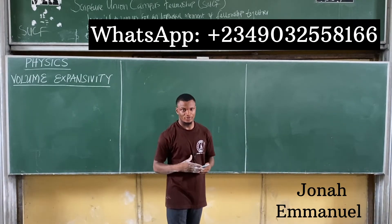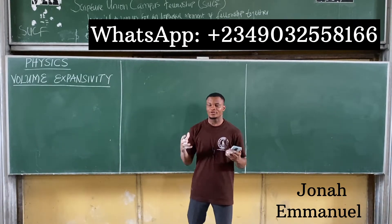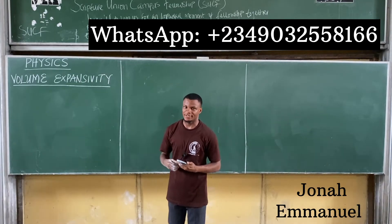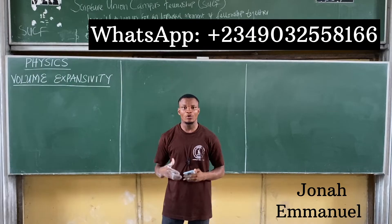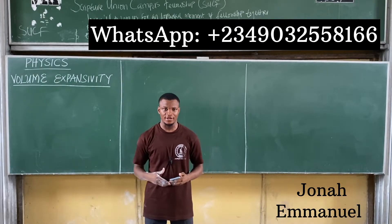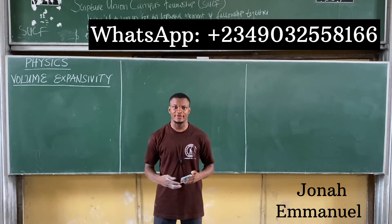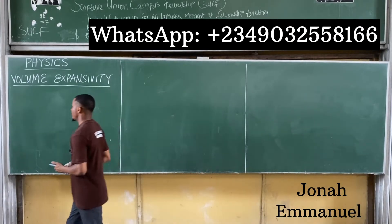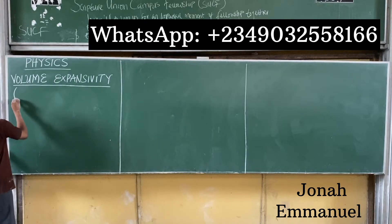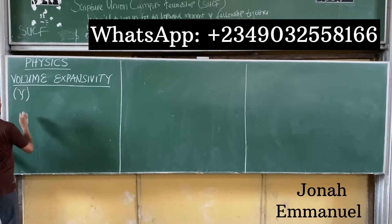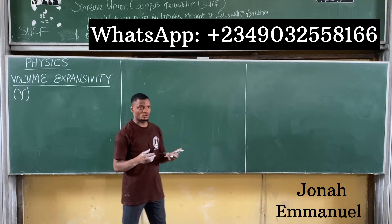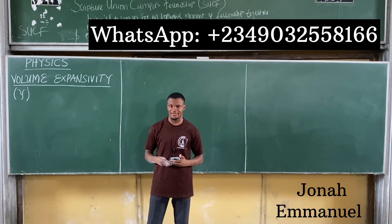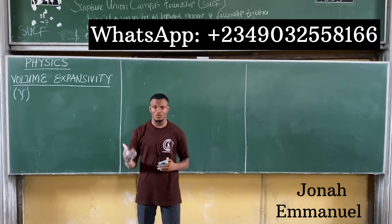Hello and welcome to today's class. In this class we're looking at the concept of volume expansivity. Another name for volume expansivity is cubic expansivity, so it's called volume or cubic expansivity, and cubic expansivity is abbreviated with the symbol gamma (γ).